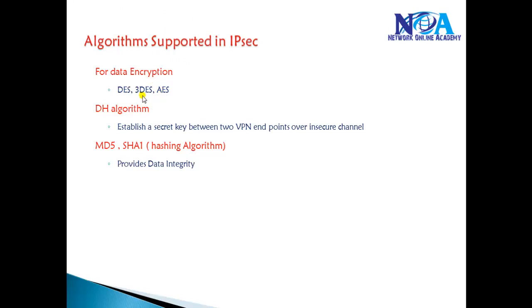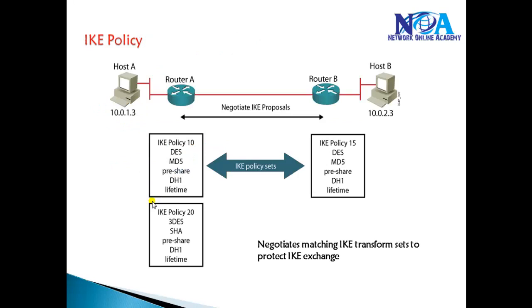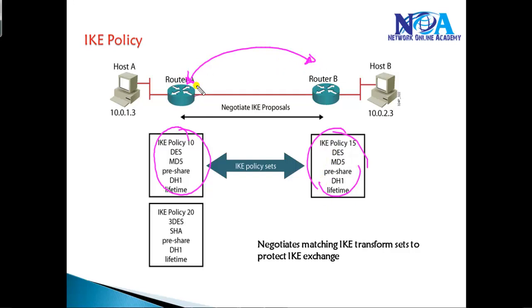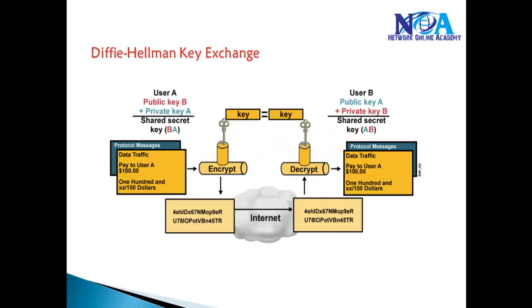We can use question marks to find out the possible options. AES is much more secure than 3DES, and 3DES is much more secure than DES. The first step will be to negotiate the ISAKMP policy. We need to ensure that whatever authentication method or algorithms we are using on Router A must match on both sites for Phase 1 to be successful. If they do not match, Phase 1 will go down and Phase 2 will not work either.